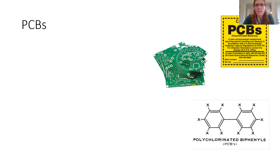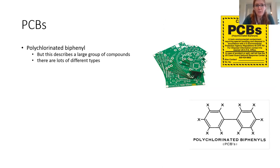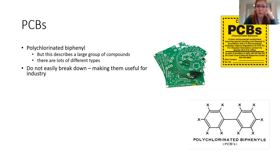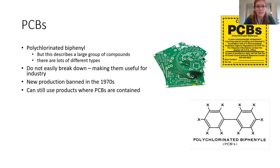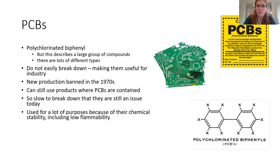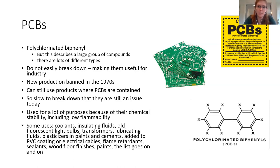Closer to home, here's a quick case study of PCBs — polychlorinated biphenyls — a large group of contaminants. There are many different types of PCBs based on their chemical components. They don't easily break down, which makes them super useful for industry, but we found out they are very harmful to the environment. New production was banned in the 1970s, but we can still use products where PCBs are contained, and they're so slow to break down that they're still an issue today. They were used as coolants, insulating fluids, and in transformers — almost all types of electrical equipment had PCBs in them.